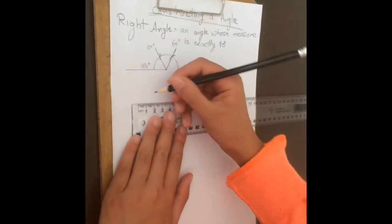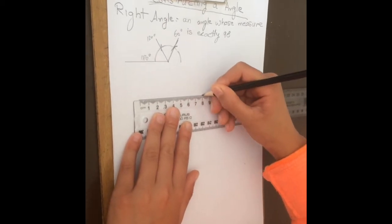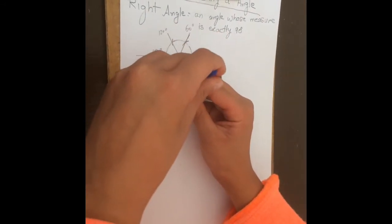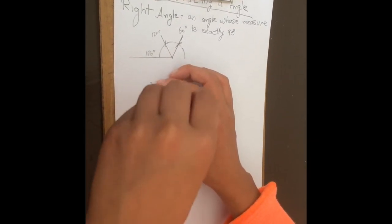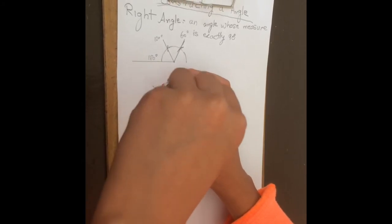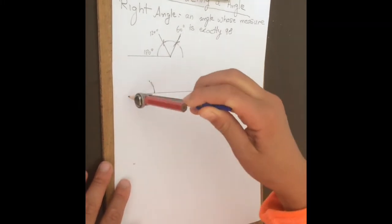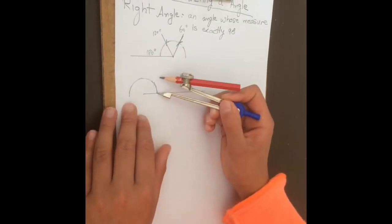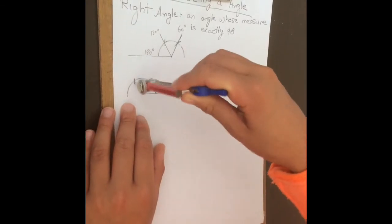Now I'm going to teach you how to make a right angle. Rule a line — not that big, eight centimeters. Open the compass, not that big. Draw a half circle. Then draw an arc, go to this intersection and draw another arc.